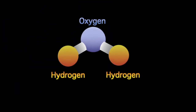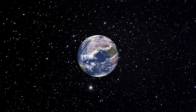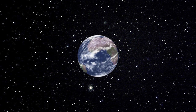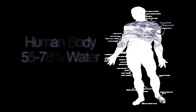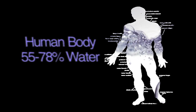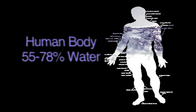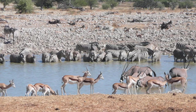The chemical formula for water is H2O, meaning that every molecule of water has one oxygen atom and two hydrogen atoms. Water covers about 70.9% of our planet. It also accounts for 55-78% of the weight of a human body. It is essential for all life forms.